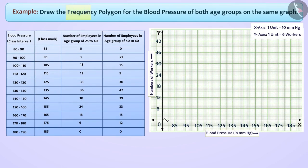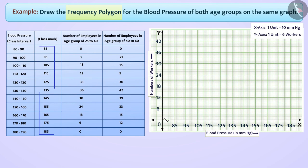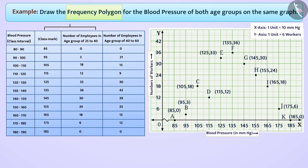Now we will draw a frequency polygon to represent the number of workers in the age group of 25 to 40. For this, we will consider the class mark as x-coordinates and the number of workers as y-coordinates. In this way, we will represent the number of workers in age group 25 to 40 as given. We will connect all these points with continuous line segments, which gives us frequency polygon A B C D E F G H I J K.